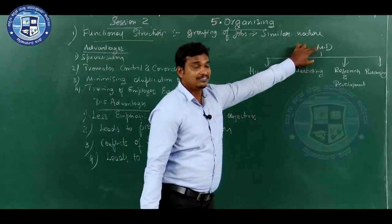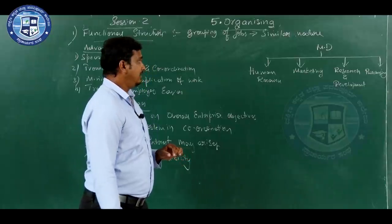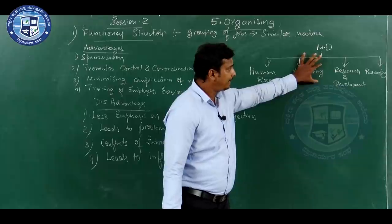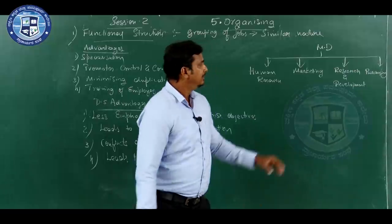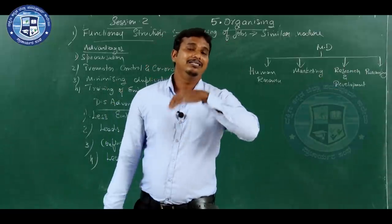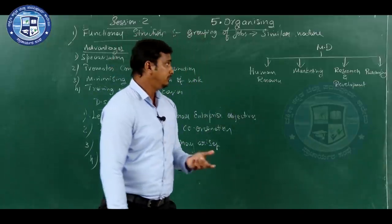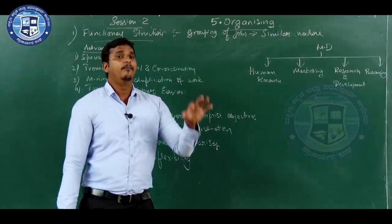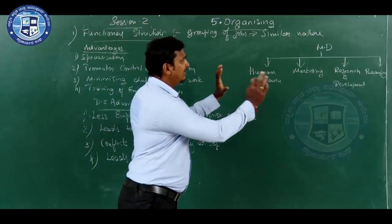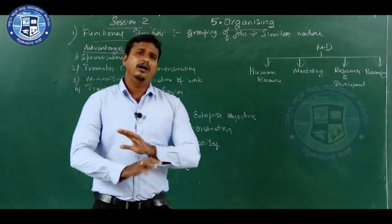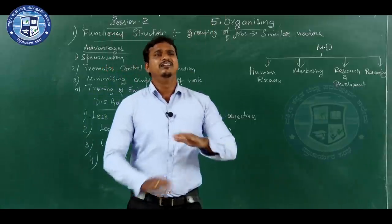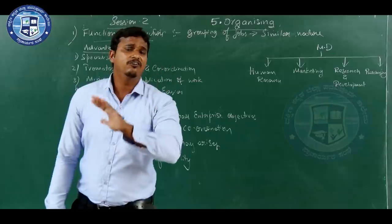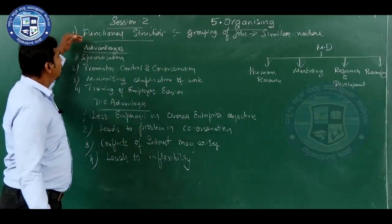This is a chart showing the functional structure of an organization. Under the Managing Director, there is the human resource department, marketing department, research and development department, and purchasing department. Research and development will look after product innovation — what new products can be launched. The purchasing department looks after production needs and purchasing of various materials. Companies can have a different number of departments, and in large-scale industries the structure is divided according to the nature of the work.